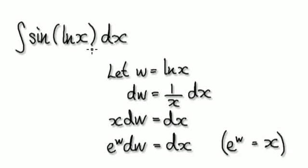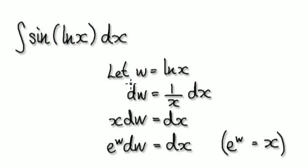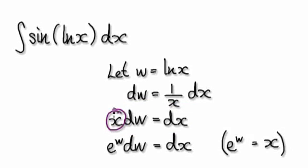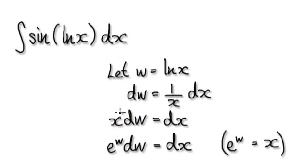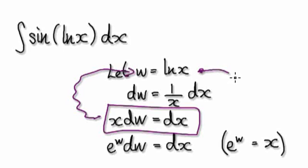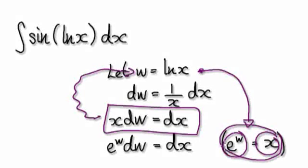So to do this, let this thing here be w. Let w be the natural log of x. Then dw equals 1/x dx. Try and make dx the subject — multiply both sides by x, and that gives you dx = x dw. But then you can see there's an annoying x lingering around. We want everything in terms of w. So from w = ln(x), if you exponentiate both sides, it gives you x = e to the power of w.